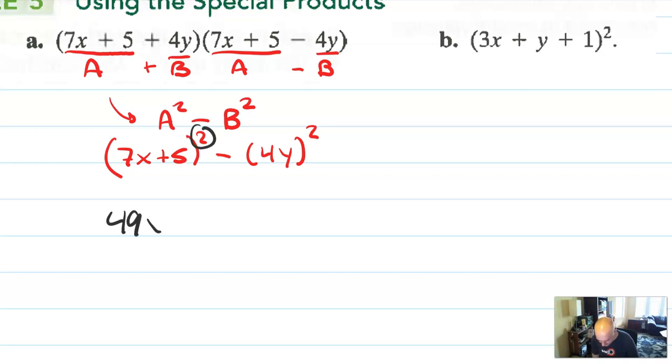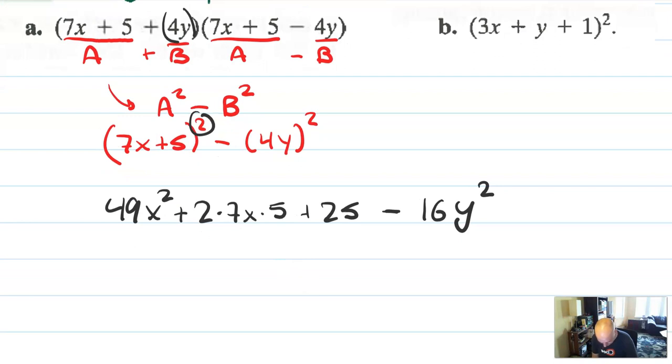So it's going to be 49x squared plus 2ab. So 2 times 7x times 5, which I'll simplify in a second, then plus 25. 4y squared is going to be minus 16y squared. Don't forget that you have to square the 4 in this case because that whole thing is like the b term. So 2 times 7 times 5 is 70. So altogether this would be 49x squared plus 70x plus 25 minus 16y squared.